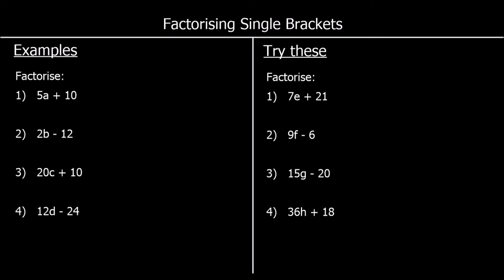Factorizing is the opposite of expanding. When we are asked to factorize something, we need to put it into brackets. Here are some examples. The first question is 5a plus 10 — we need to put that into brackets and take out the biggest factor. 5 and 10 are both in the five times table.